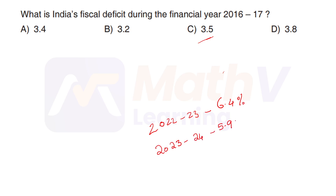If you are going to discuss this question, the answer is 6.4 and 5.98. We are going to discuss this question. For the fiscal deficit,